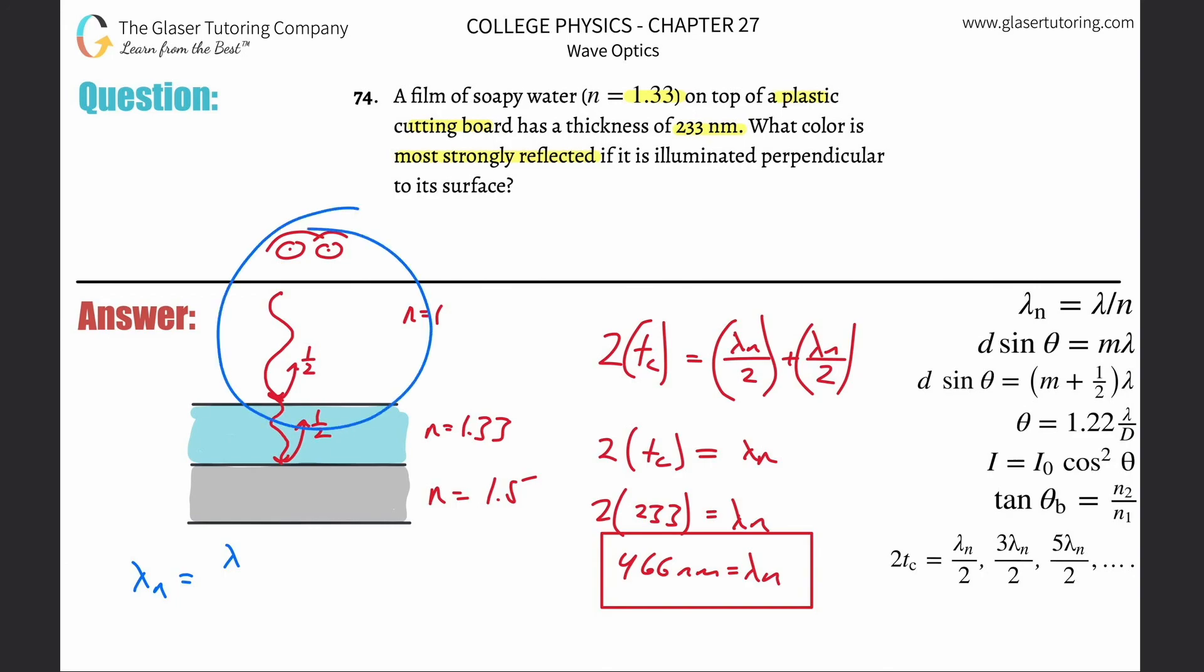We're going to assume that the index of refraction of air up there is the same as that of a vacuum. To find the wavelength in air, which is basically going to be the wavelength you're going to see, it's just simply the wavelength in the particular soap medium multiplied by that index of refraction. That becomes 466 multiplied by 1.33, and we get about 620 nanometers.